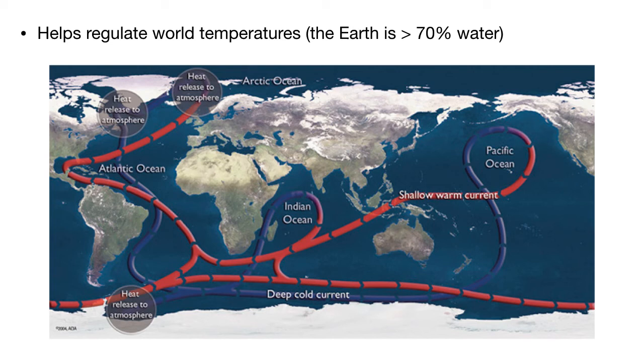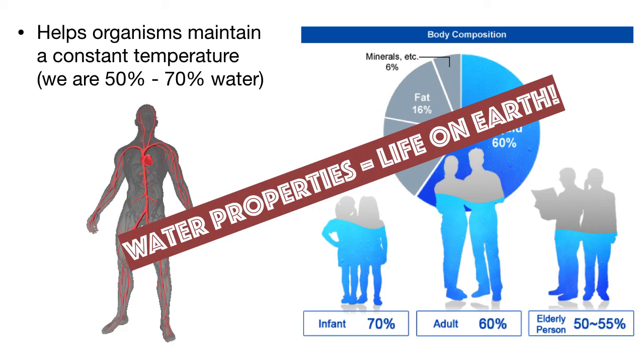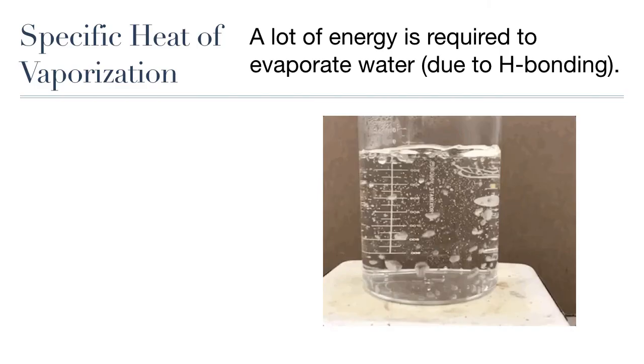So water can absorb a large amount of heat without changing its temperature very much. And this allows the oceans that happen to cover more than 70% of the Earth's surface to absorb excess heat and moderate the planet's temperature, keeping the planet at just the right temperature for life to exist. In a smaller scale, the water in our blood helps us regulate our body temperature.